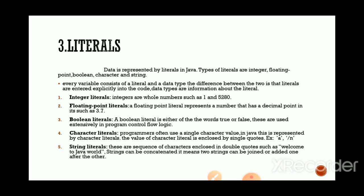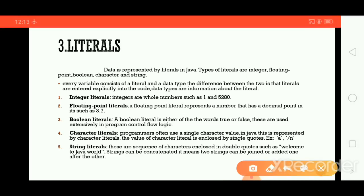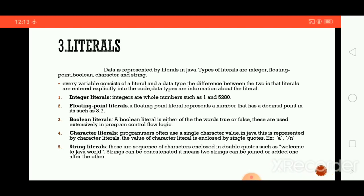Every variable consists of a literal and a data type. The difference between the two is that literals are entered explicitly into the code, while data types are information about the literal. For example, if I declare 'int a = 10', the variable 'a' has data type int and the literal value is 10. The literal value is entered explicitly into the code, and data types give information about which type of literal to use.